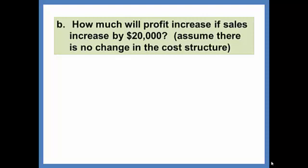We could recompute the income statement, but the easier way to find the increase in profit is to take the increase in sales of $20,000 and multiply by the contribution margin ratio of 30%. This will give us $6,000. So if sales increase by $20,000, profit will increase by $6,000. The other $14,000 of sales will go toward covering variable costs.